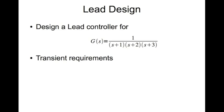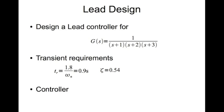Obviously you are going to satisfy some transient requirements. Transient requirements determine where your desired closed-loop pole locations are. Here the transient requirements are: rise time is 0.9 seconds and damping constant is 0.54.